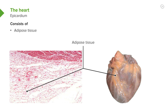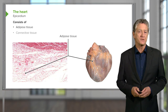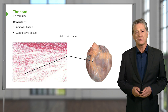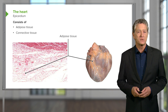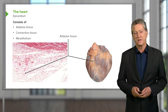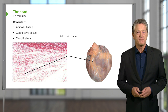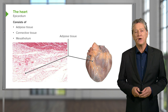That adipose tissue can be rather frustrating when trying to locate the coronary arteries in dissection. The epicardium is also composed of connective tissue — collagen, elastic tissue, and other normal loose connective tissue fibres. On the outside, it is lined by a squamous-type epithelium called the mesothelium. So that mesothelium, underlying connective tissue, and adipose tissue create the epicardium.